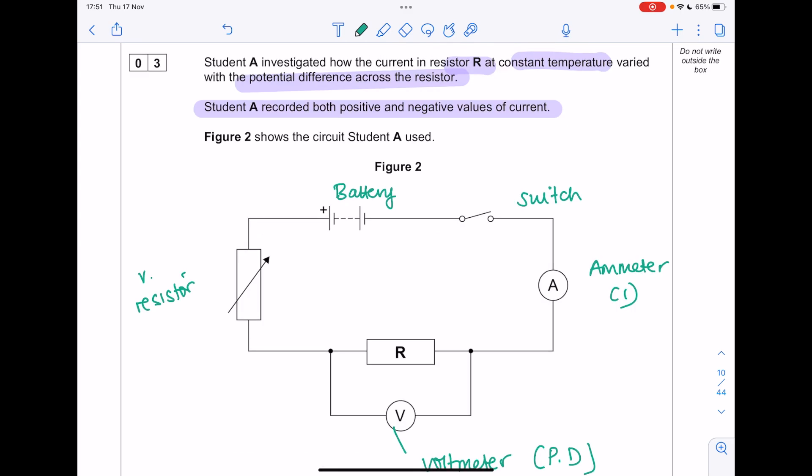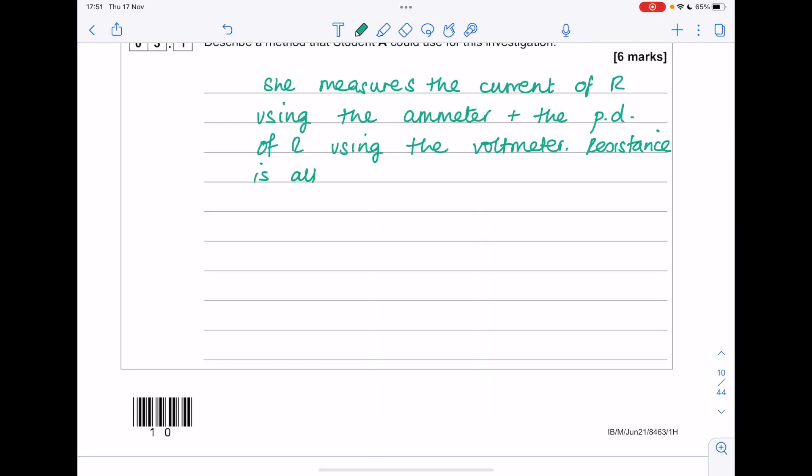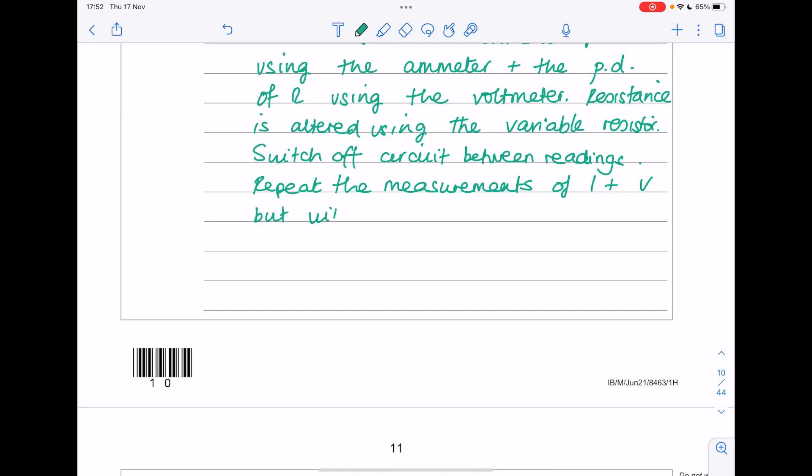Remember, in order to alter these values, we need to alter the resistance of the circuit which is the purpose of the variable resistor. Switch off the circuit between readings. Repeat the measurements of current and potential difference with negative values. It's always good to plot a graph of current against potential difference.